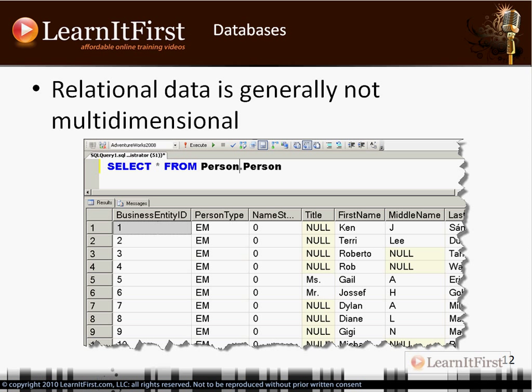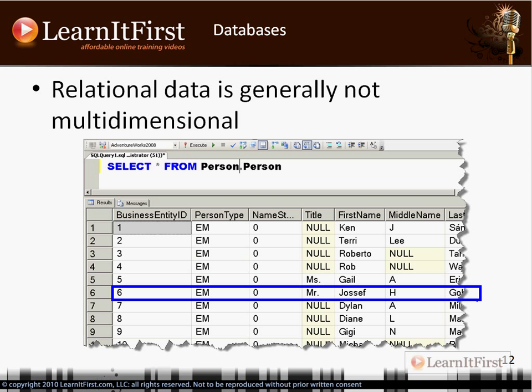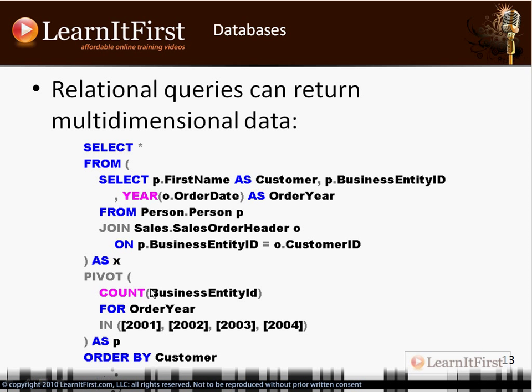What I'm looking at here is one-dimensional data. A person's title doesn't refer to their title in a location or along a dimension — this is a single dimension. This is how relational data is generally stored. We can work with multi-dimensional data using relational databases in our queries, but we generally don't store it in a multi-dimensional format.